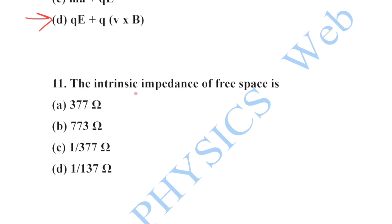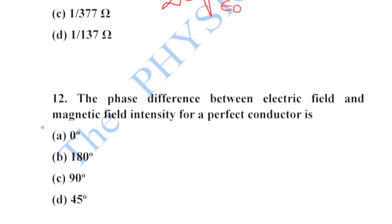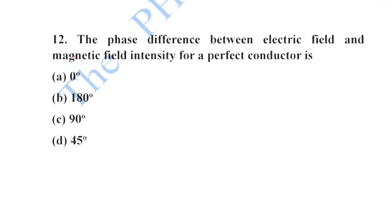Next: the phase difference between electric field and magnetic field intensity for a perfect conductor is 45 degrees. This is a very important question to remember. Option D is your correct option.